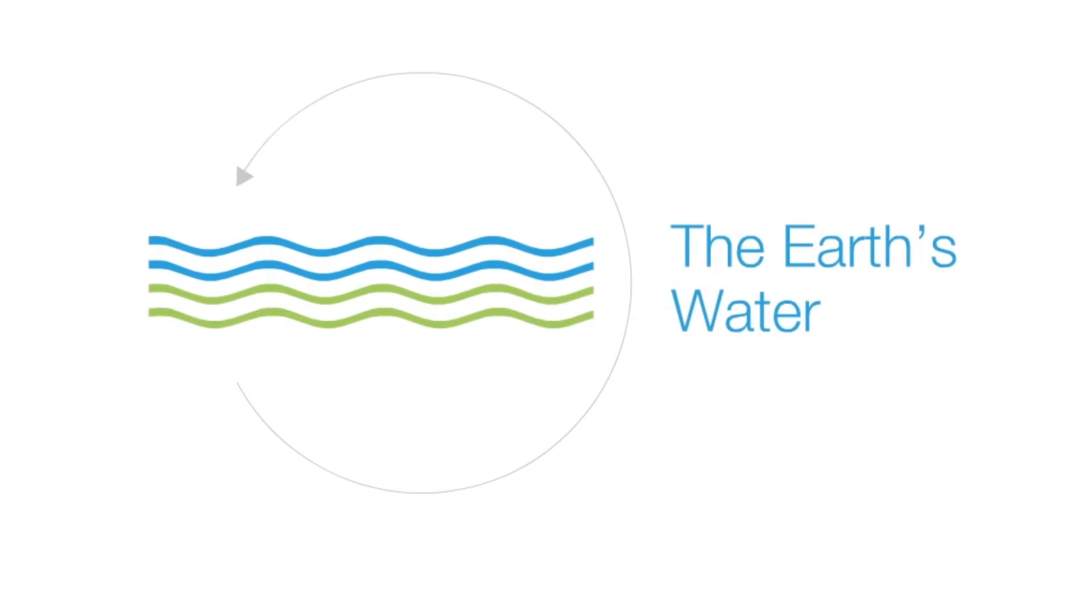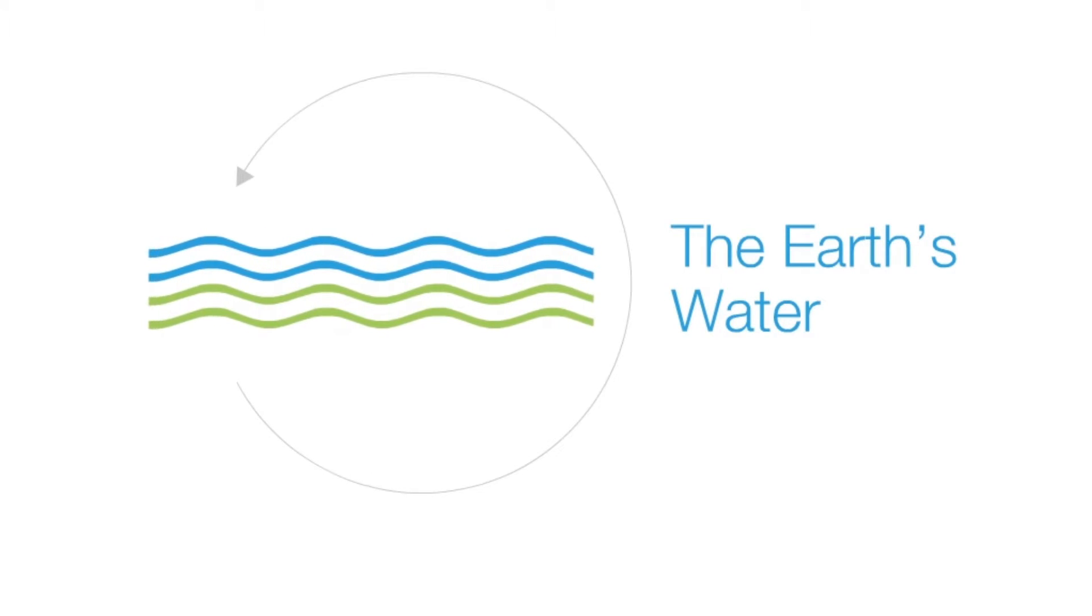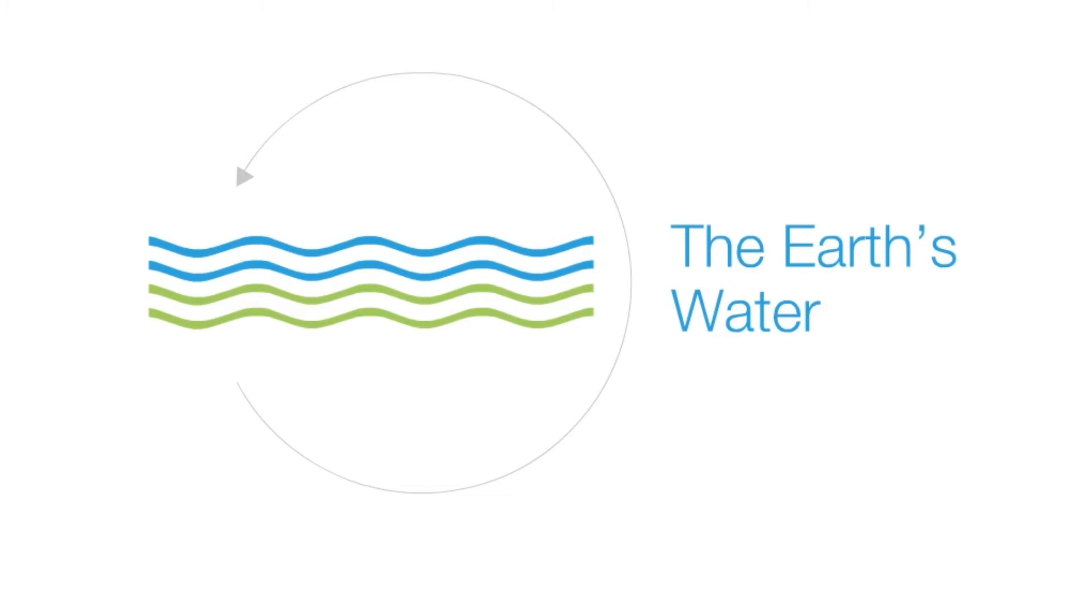Earth is the blue planet. 71% of its surface is covered with water. And yet, water is a very precious commodity because most of it is saltwater in the oceans.